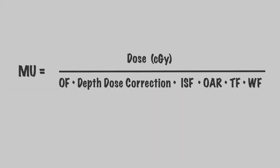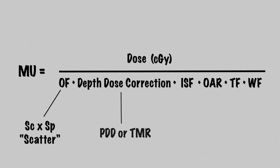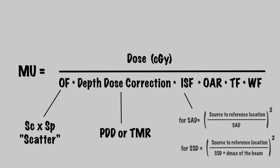With this knowledge, we can develop a formula. Each of the discussed modifiers impact the dose reaching our point or target of interest, so they go in the denominator of our formula. Therefore, our formula becomes dose in centigrade divided by output factor, the depth dose correction, the inverse square factor, and any other modifiers such as off-axis ratio, tray factors, or wedges.